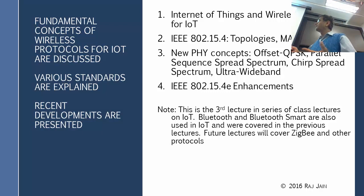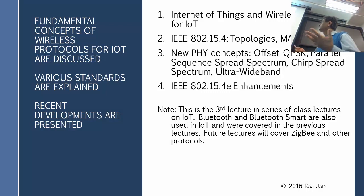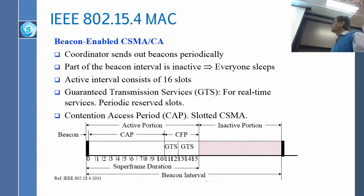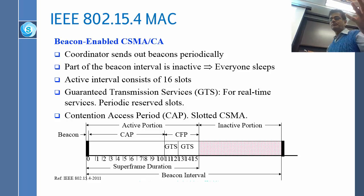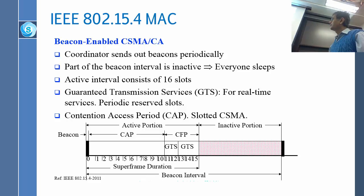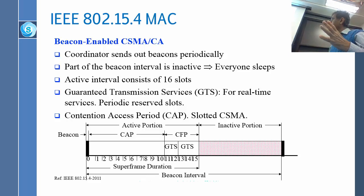The MAC is beacon-enabled SMAC-CA. This is very similar to 802.11, so I will go a little bit faster. The beacon comes on and it has all the announcements as to what is the name of the network and how long all these different parameters are.